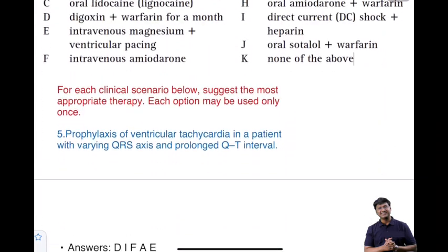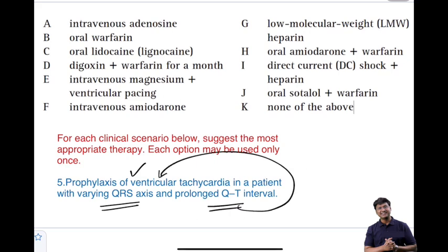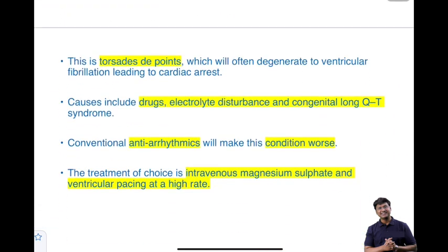The fifth clinical scenario: prophylaxis of VT in a patient with varying QRS complexes and prolonged QT interval. Varying QRS axis with prolonged QT interval — you should suspect torsades de pointes. This is the reason a prophylactic drug is required. Torsades de pointes will often degenerate to ventricular fibrillation, leading to cardiac arrest.